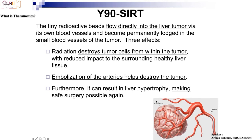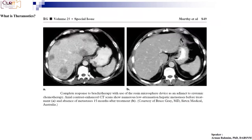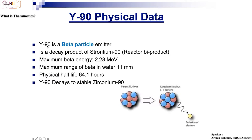Interestingly, smaller amounts of the microspheres that end up in healthy parts of the liver actually cause those healthy parts to grow — this is hypertrophy. So you're shrinking or killing the tumor while inducing the normal liver tissue to grow. Sometimes you may have too much tumor fraction in the liver to safely do surgery, but after SIRT the tumor has shrunk and the normal part has become bigger, so the fraction of tumor to normal tissue becomes small enough that surgery is now safe. It's a really exciting area, and it can also be imaged, so it's theranostic in that sense.